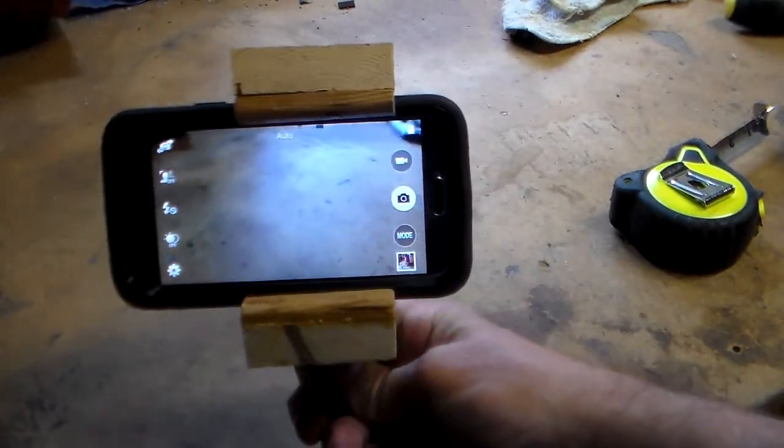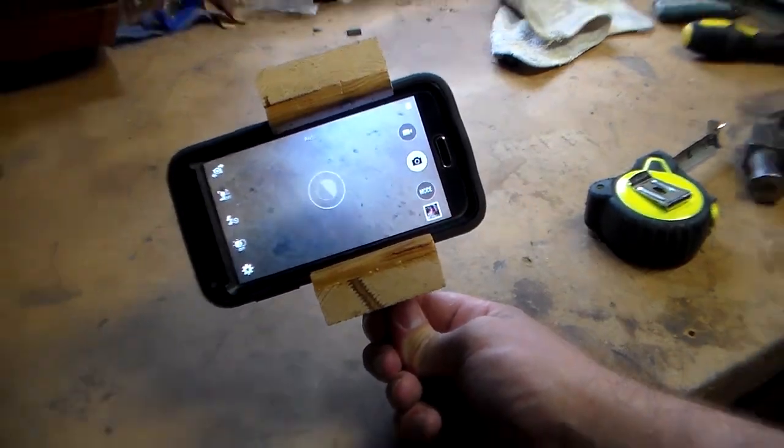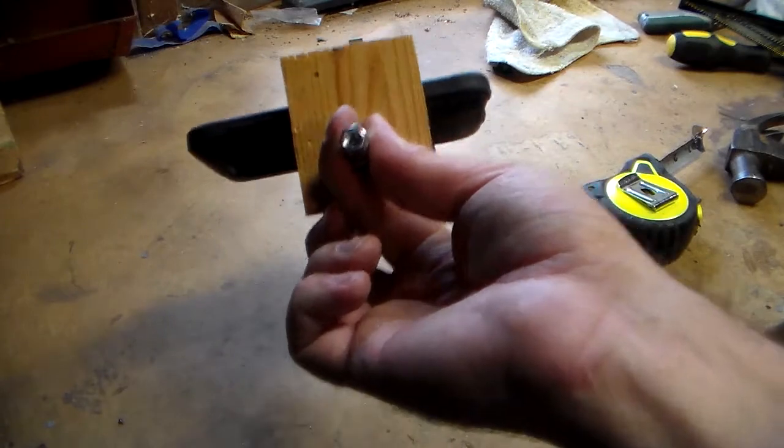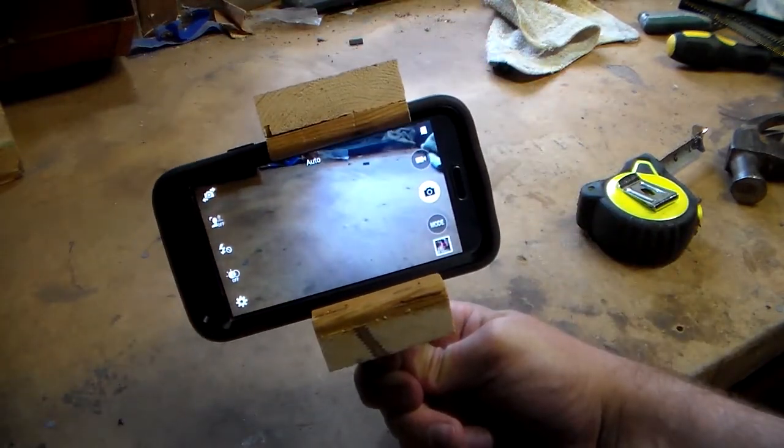And there you have it, a simple, easy DIY camera mount for your phone. And the nice thing about all this is, with this quarter inch coupler on the bottom, this will fit right onto any standard tripod mount.